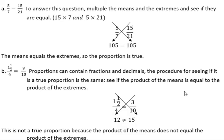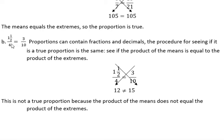Here's another one. One and a half over 4 is to... One and a half is to 4 as 3 is to 10. Proportions can contain fractions and decimals, and the procedure is the same. Whether it has fractions, decimals, or whole numbers, we do the cross products and see if they are equal.